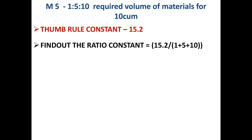Next, you have to find out the ratio constant. The ratio constant is this thumb rule constant divided by the addition of the given ratios. For M5, the given ratios are 1, 5, and 10, so: 15.2 divided by (1 + 5 + 10) = 15.2 ÷ 16 = 0.95 as the ratio constant.